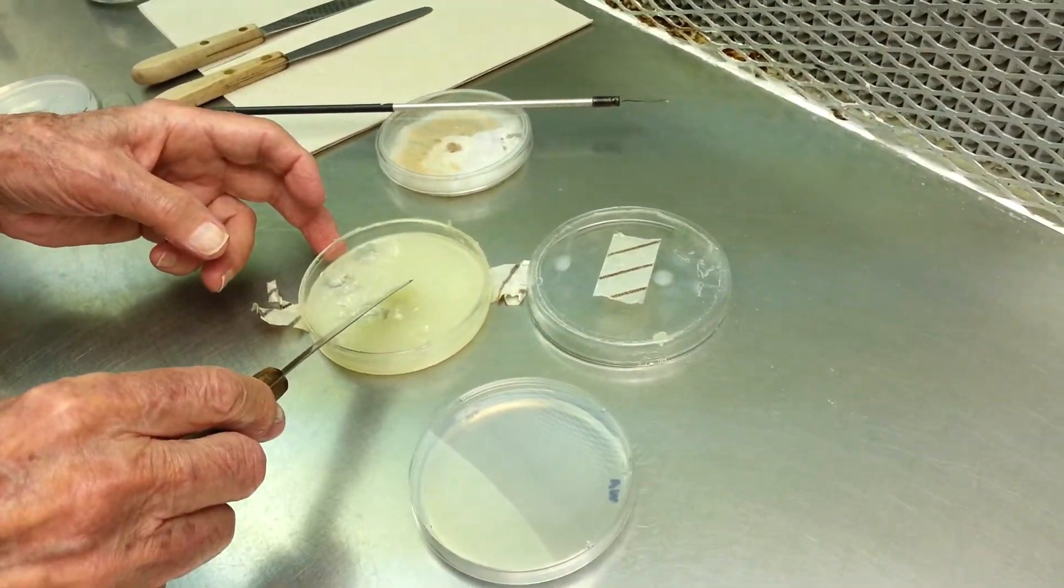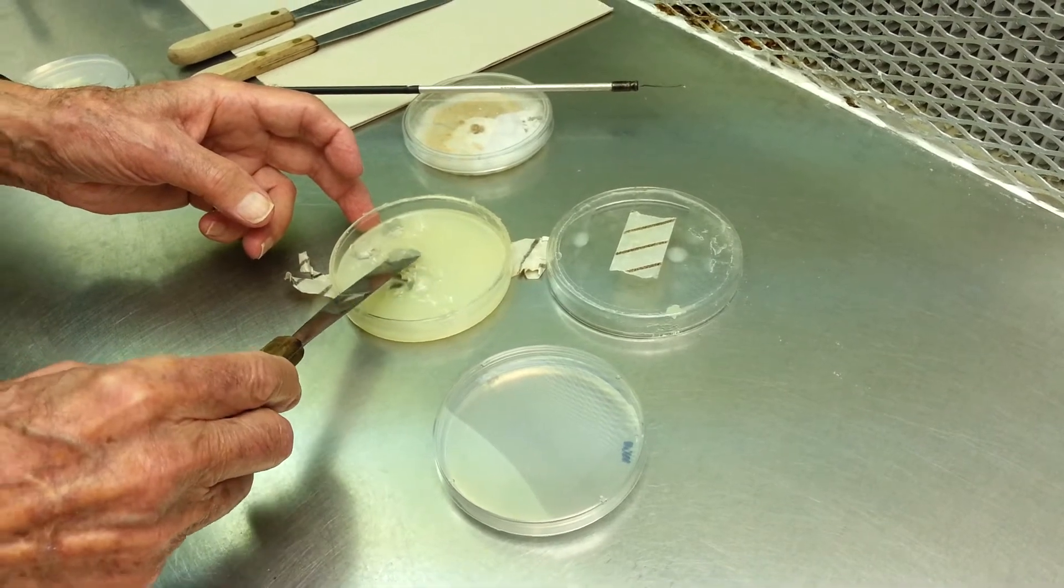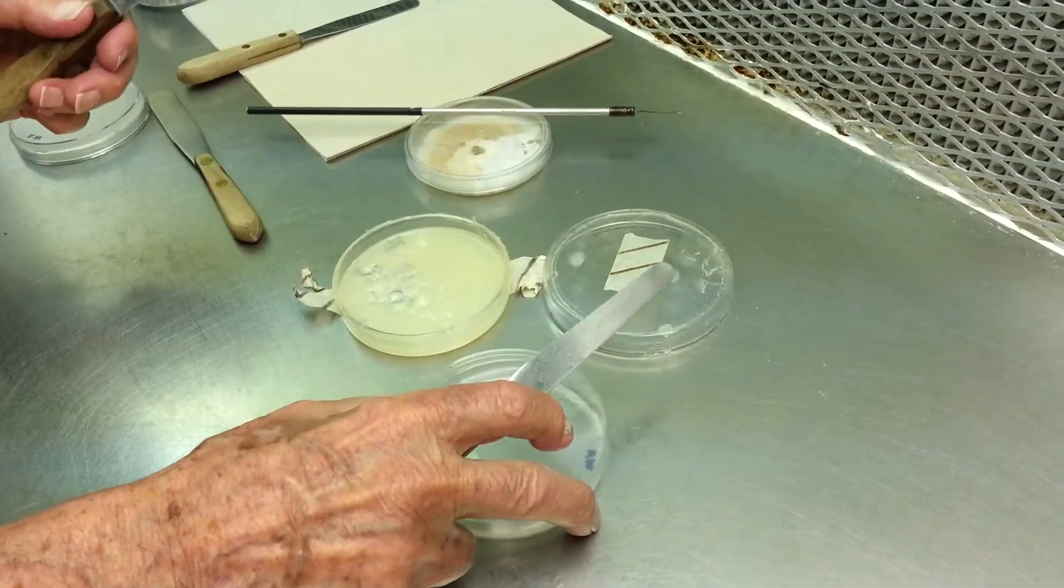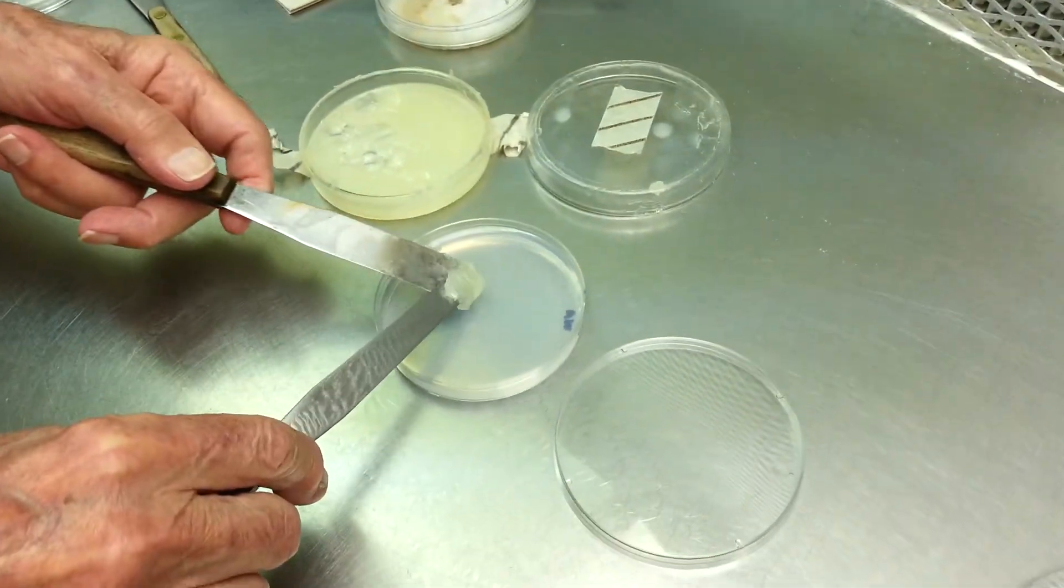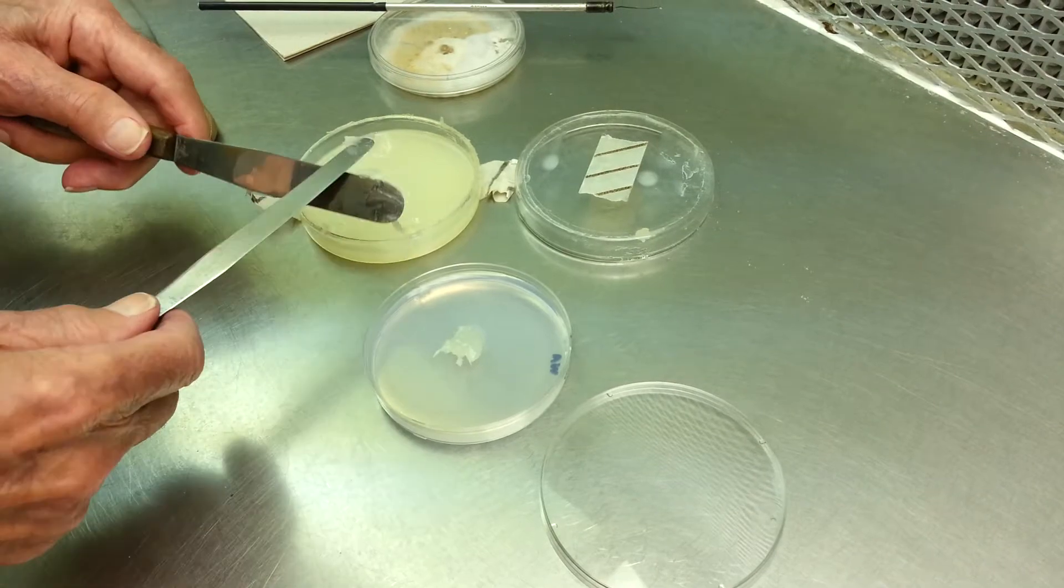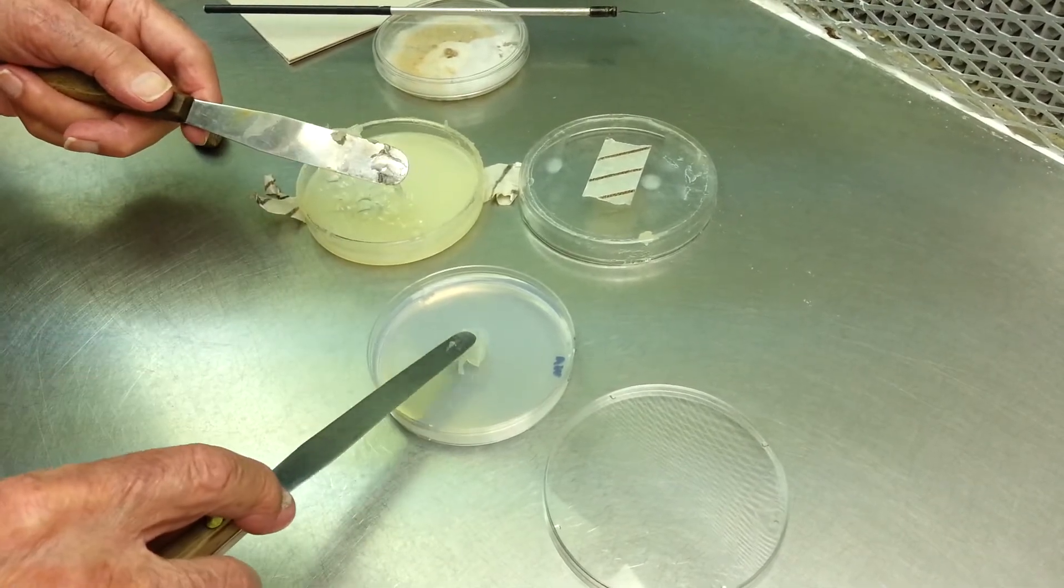We take a small amount of sterilized Vaseline, and put it in the middle of the plate in this fashion, flatten it out.